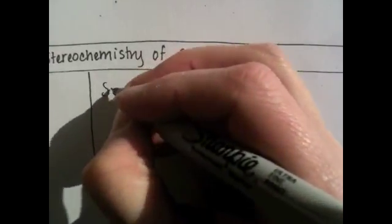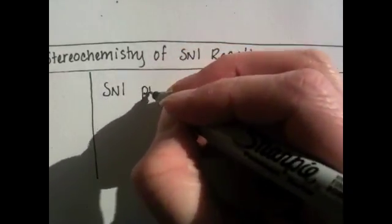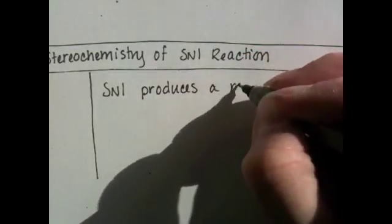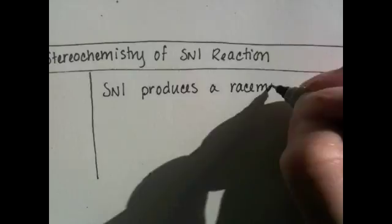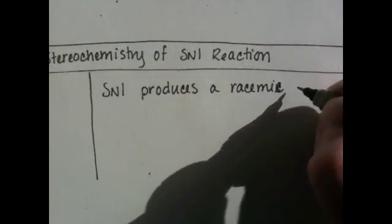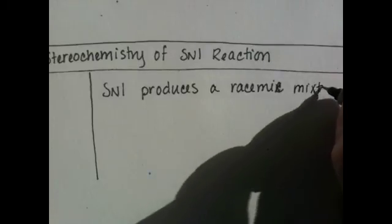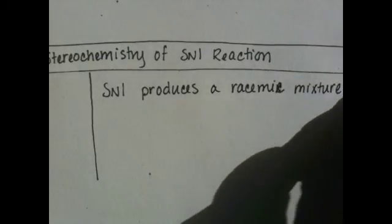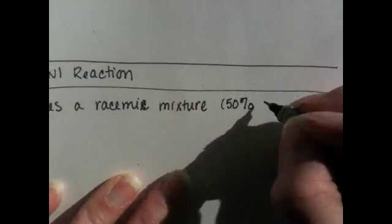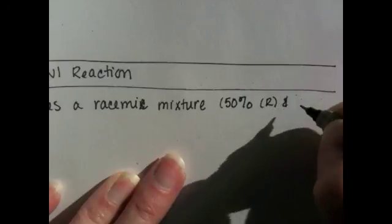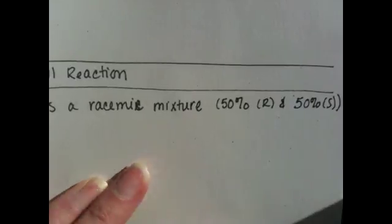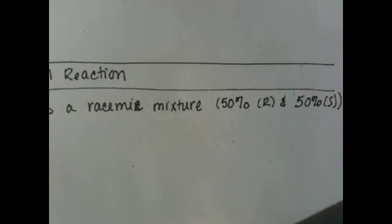The SN1 reaction produces a racemic mixture when there are stereoisomers possible. If you remember from chapter 5, this means you're going to get exactly 50% of the R product and 50% of the S product. In this section, we're going to look at how that happens.